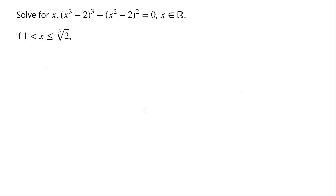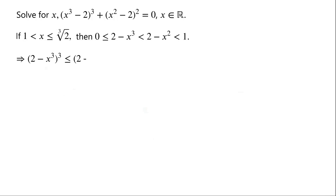If x is greater than 1 and is less than or equal to the cube root of 2, then 2 minus x cubed is greater than or equal to 0 and is less than 2 minus x squared, which is less than 1. As 2 minus x cubed is greater than or equal to 0 and is less than 1, so 2 minus x cubed, all cubed, is less than or equal to 2 minus x cubed, all squared.